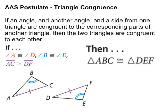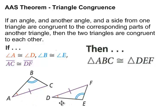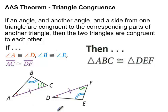Now, the Angle-Angle-Side Theorem. You have to follow the order: Angle-Angle-Side, Angle-Angle-Side. These triangles are now congruent because of this theorem. If these two angles are congruent to those two angles, then the third angle must be congruent by the Third Angle Theorem — which means we're falling back into Angle-Side-Angle. That's why this is a theorem and not a postulate like the previous rule — it's something we can prove.